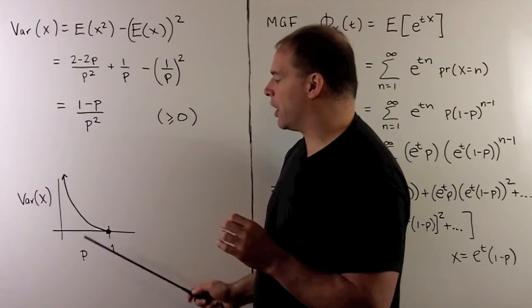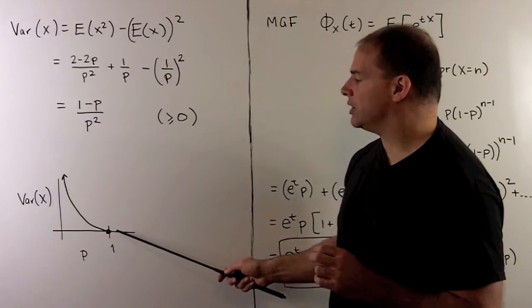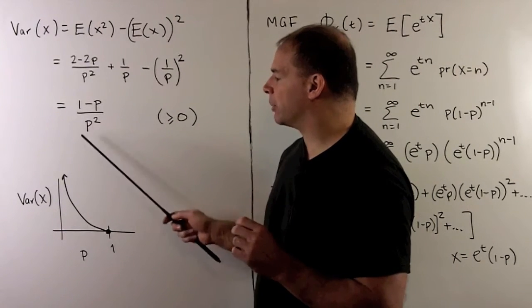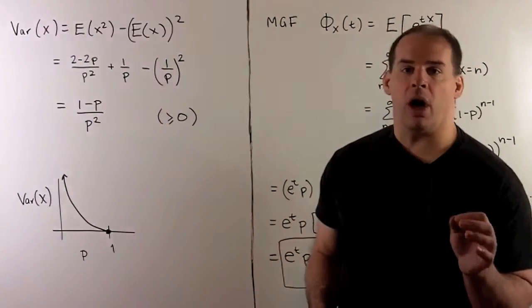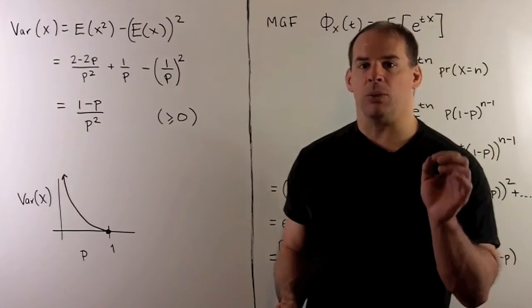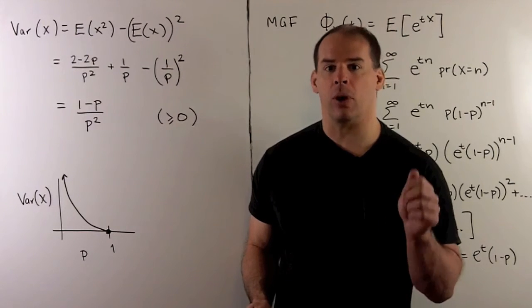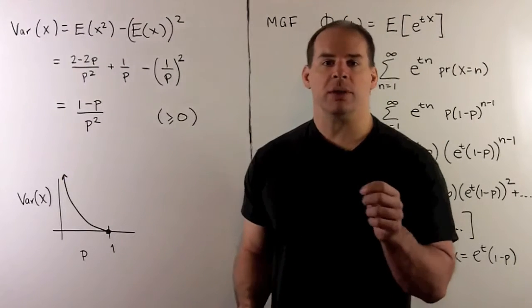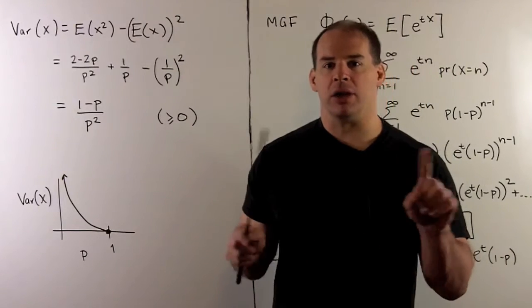If we sketch the variance as a function of P: when P equals 1, we get 0. As P goes to 0 from the right, the variance goes off to plus infinity. When P equals 1 and we're certain of getting heads, the mean is 1 and there's no spread about the mean — we're always certain to get that 1. As P gets smaller and the probability of heads becomes less certain, the spread about the mean gets larger and larger.